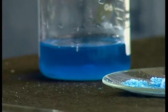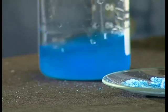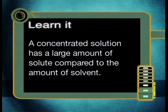Do you notice that as more solute is added, the blue color becomes darker? This is called a concentrated solution. A concentrated solution has a large amount of solute compared to the amount of solvent. Now, as the solution became more concentrated, did you notice that it was taking longer for all the solute to dissolve into the solvent compared to our very first dilute solution?